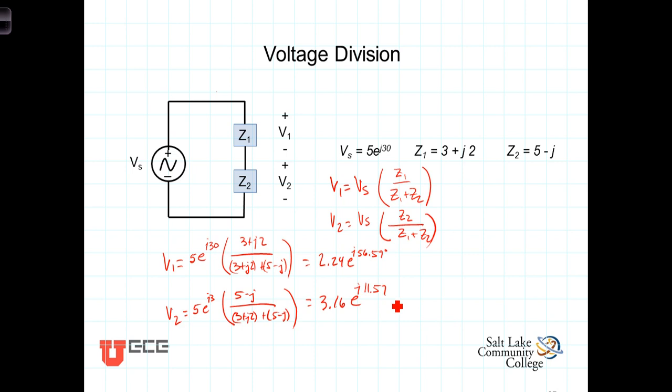And I'll leave it to you to show that V1 plus V2 does in fact equal 5e to the j 30.